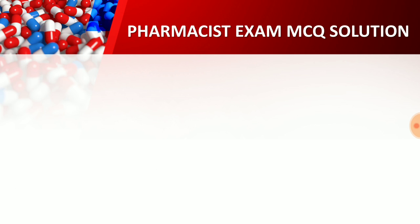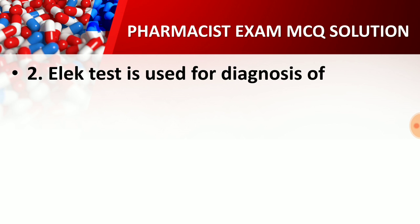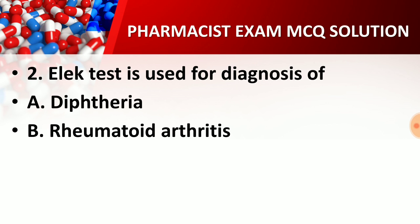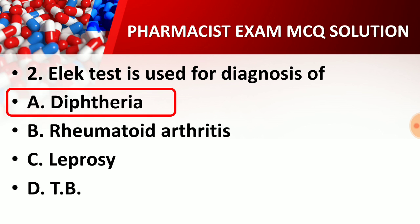Question number two: Elek's test is used for diagnosis of — option A, diphtheria; option B, rheumatoid arthritis; option C, leprosy; option D, TB. The right answer is option A, diphtheria. Elek's test is used for the diagnosis of diphtheria — to identify the diphtheria disease. Another test also performed for diphtheria is the Schick test.